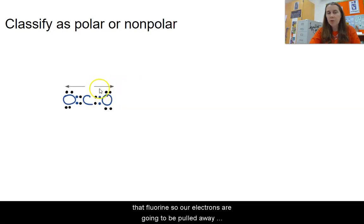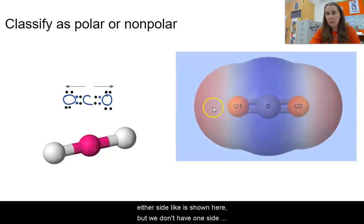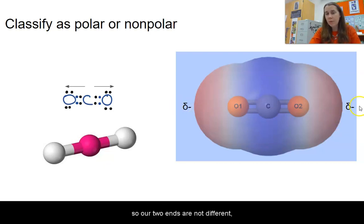So our electrons are going to be pulled away from the middle of the atom. In this case, we don't have any extra dots that aren't in bonds on our carbon. So this one is actually linear. So if we pull evenly on both sides with our oxygens, then we're going to end up with a small negative charge on either side, like is shown here. But we don't have one side that has a positive charge and one that has a negative. We have two ends that have small negative charges. So our two ends are not different. Even though we have some polar bonds in that molecule, that makes this molecule nonpolar.